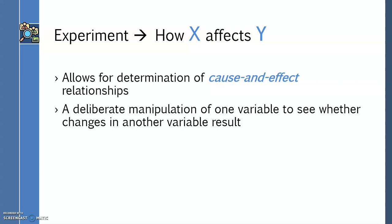For example, case studies, surveys, and correlation do not allow one to make a cause and effect relationship judgment. In an experiment, there is a deliberate manipulation of one variable to see whether changes in another variable result.